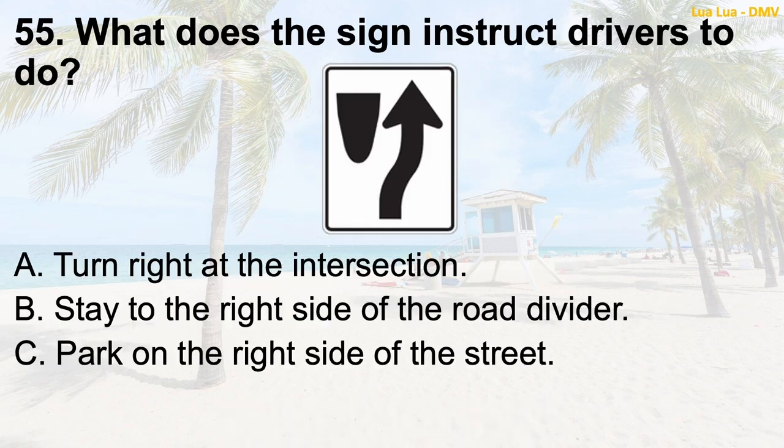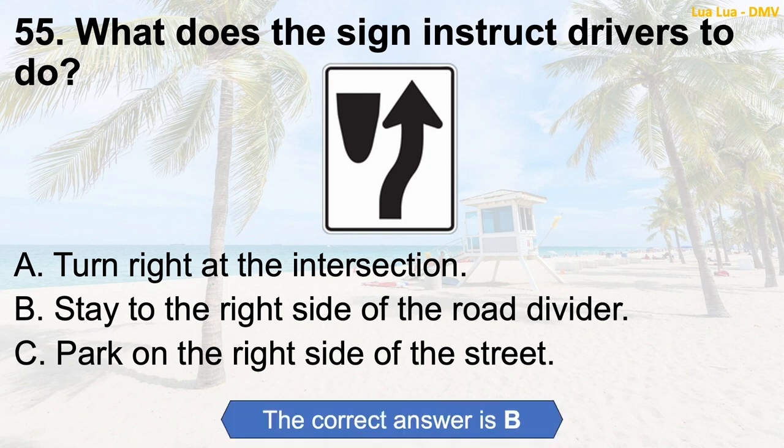Question 55: What does the sign instruct drivers to do? A. Turn right at the intersection. B. Stay to the right side of the road divider. C. Park on the right side of the street. The correct answer is B: Stay to the right side of the road divider.